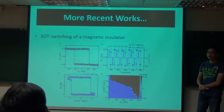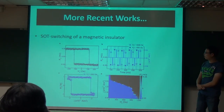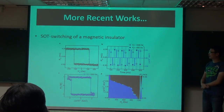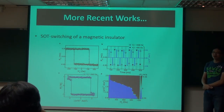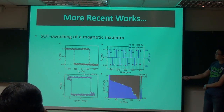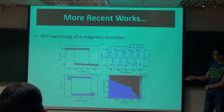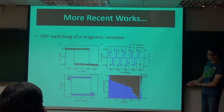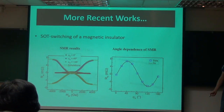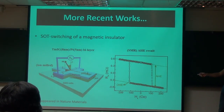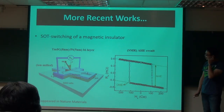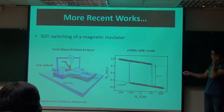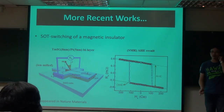Question: Is there any optical imaging on these domains? Unfortunately no — we tried very hard to get images, but since these materials are transparent it's very hard. The original plan was to do detection using Faraday rotation. But for the anomalous Hall signal it's actually very small — only about one microvolt — and it took us a very long time to get a good signal-to-noise ratio.